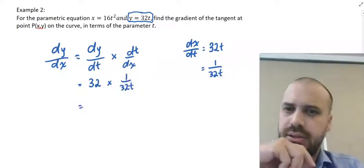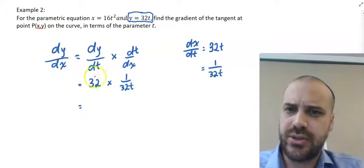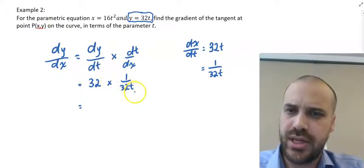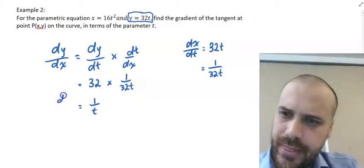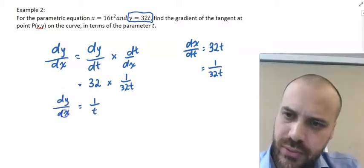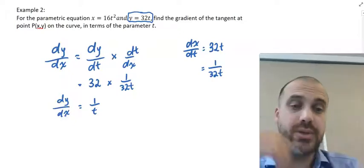Alright, now, we put all of this together. So, 32 times 1 on 32t, what are we going to get? We're going to get 1 on t. So, derivative of y with respect to x equals 1 on t.